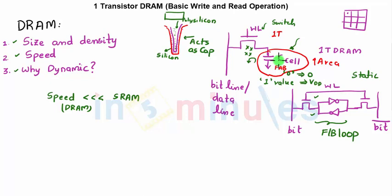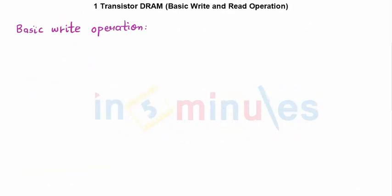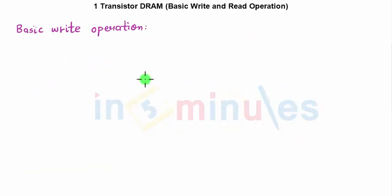Moving ahead, let's understand the basic writing principle in DRAM. It's very simple because we know that it's nothing but a pass transistor or an access transistor with this being called the word line, this is my bit line or my data line, and this is my capacitor which will store the charge.